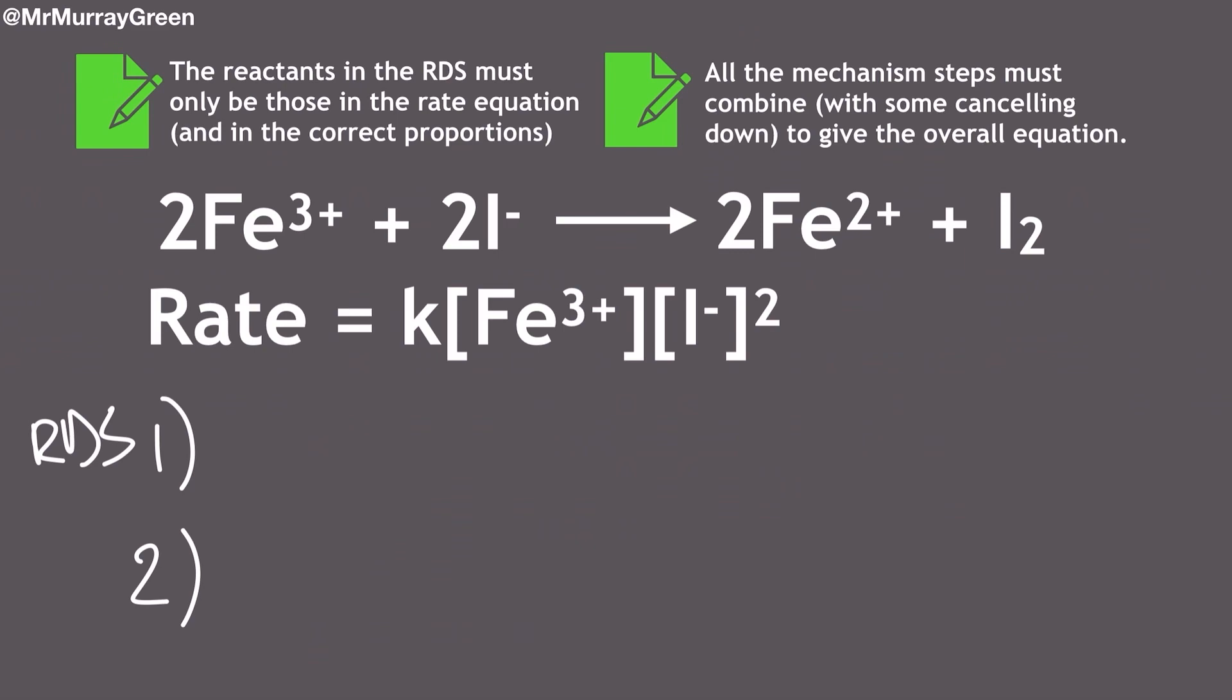So what are my reactants going to be in my rate determining step, which is step one of this mechanism? We need to consult fact number one for this. Here it says that the reactants in the rate determining step must be those which are shown in the rate equation and they need to be in the correct proportions. Can you see here how I've used iron-3 and iodide and they are in a 1 to 2 ratio in this rate determining step? That's because they are order 1 and order 2 in the rate equation.